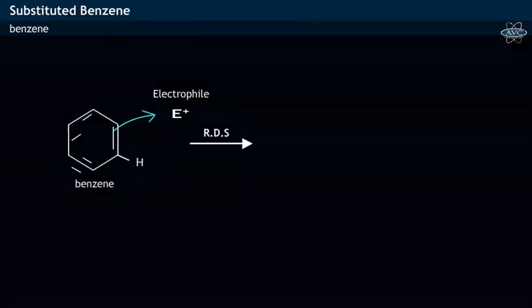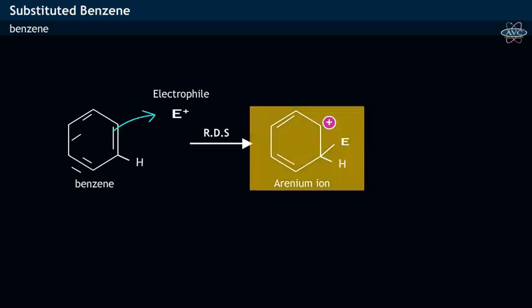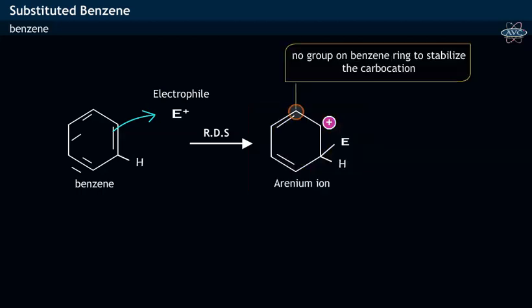The electrophilic attack on the benzene ring results in the arinium ion as shown. Here, in the arinium ion intermediate, it may be noticed that as there is no group or substituent attached to the benzene ring, the carbocation is not stabilized. Thus, the arinium ion of benzene is less stable compared to the arinium ion formed by phenol.